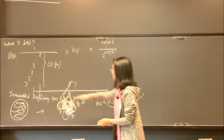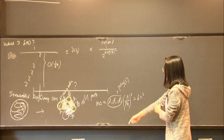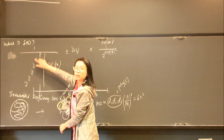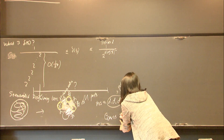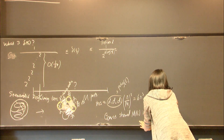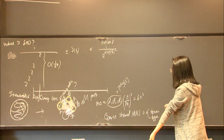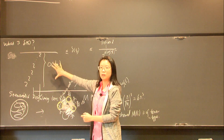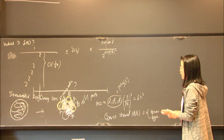Unfortunately, although Szemerédi's regularity lemma guarantees a finite number of parts, that number m is very large — of tower type. This was established by Gowers, and the tower-type size of m is essentially optimal. So there's no way to bring down the value of m, meaning the tower-type delta bound is the best one can hope for when going through the regularity lemma method.